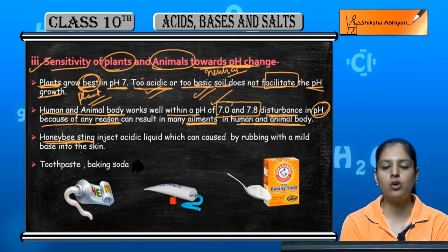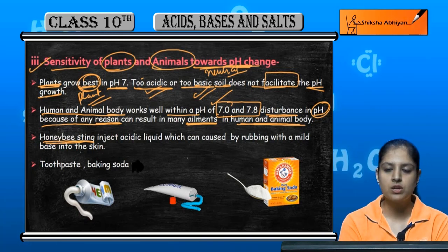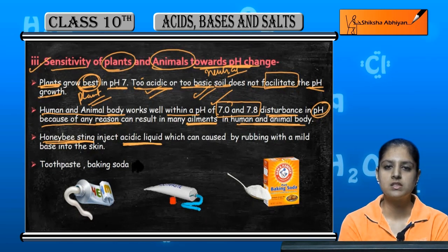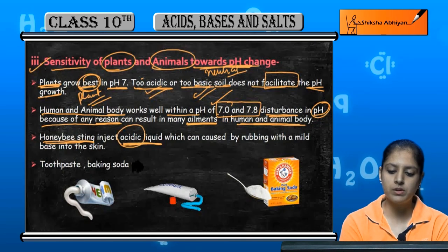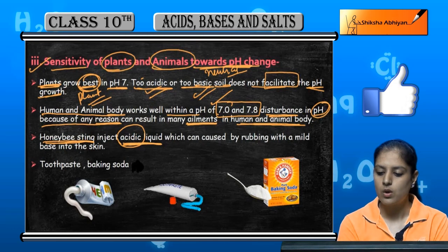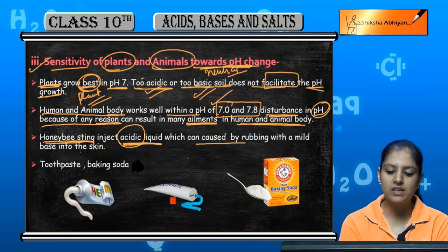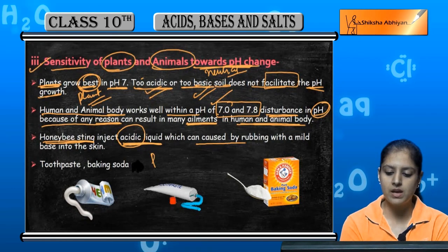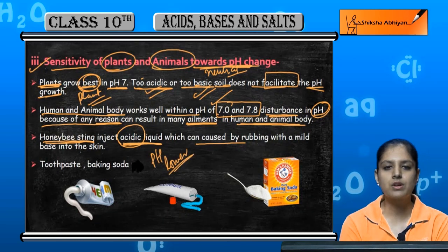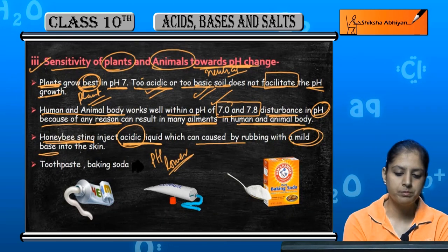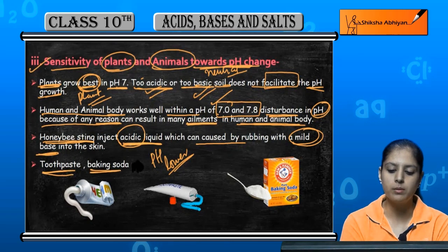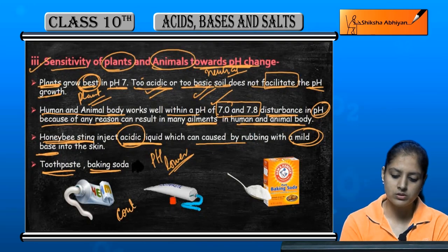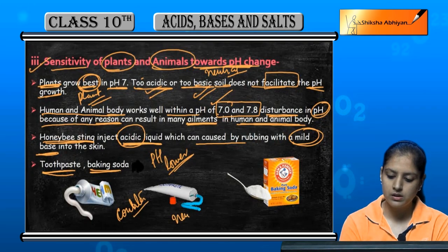Now, honey bee sting. When a honey bee stings and is injected into the body, it releases an acidic liquid. Since our body has a neutral pH, this acidic liquid can cause harm. To counter it, we use a mild base — for example, toothpaste or baking soda — and it will be neutralized.